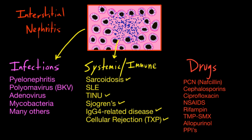Certain medications can cause an allergic interstitial nephritis. Penicillins and cephalosporins are common culprits. Nafcillin in particular is known to cause interstitial nephritis with good frequency. Cipro can do this. NSAIDs can do this. Rifampin, sulfonamides including Bactrim, and allopurinol are also known to cause it. PPIs — proton pump inhibitors — appear to cause interstitial nephritis as a class effect, so any PPI can be responsible.